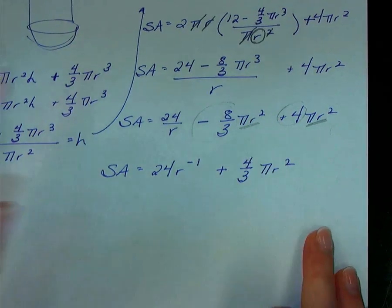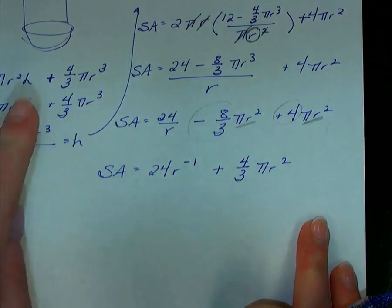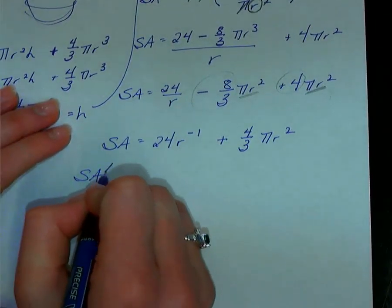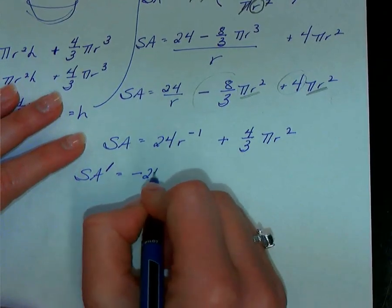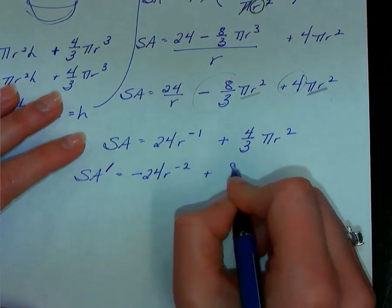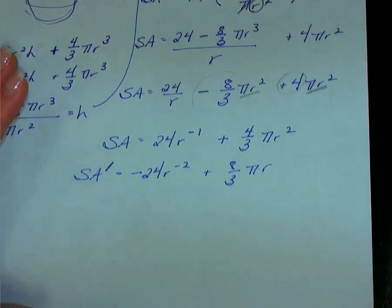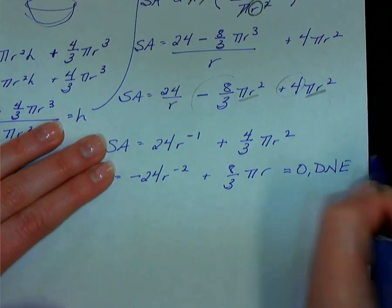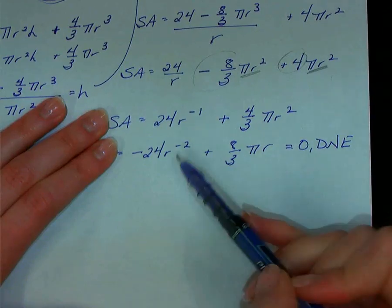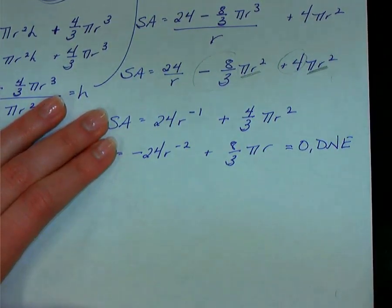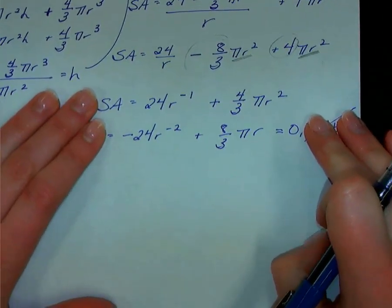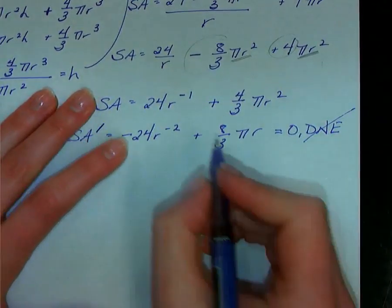Okay, that is a much simpler formula. Now I want to minimize surface area, so I want the derivative to be 0 or DNE and sign change. Here we go. Surface area prime is -24r^(-2) plus (8/3)πr. I want to know when does my derivative equal 0 or DNE. This will equal DNE when that radius drops down to your denominator, so when the radius is 0. Does it make sense that the radius would be 0? No. So we don't have to worry, we're good there.